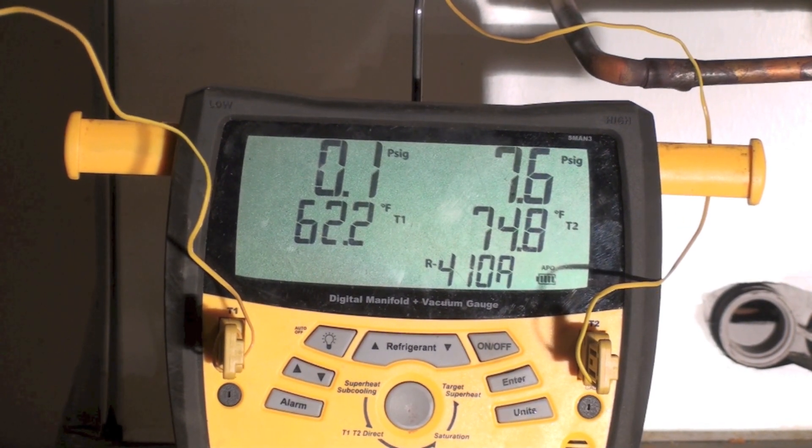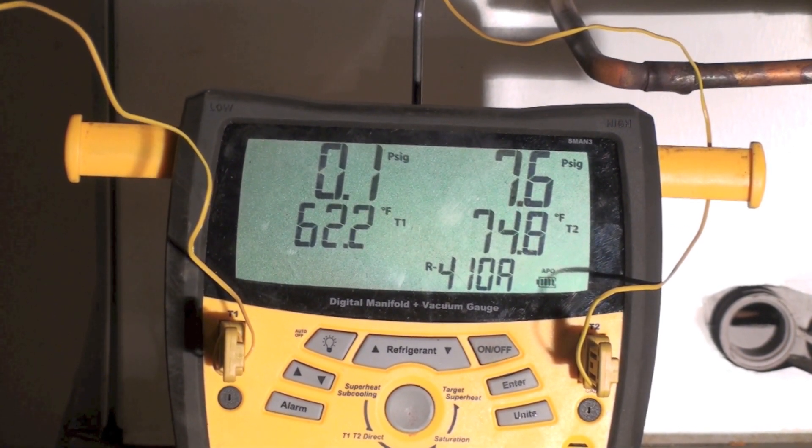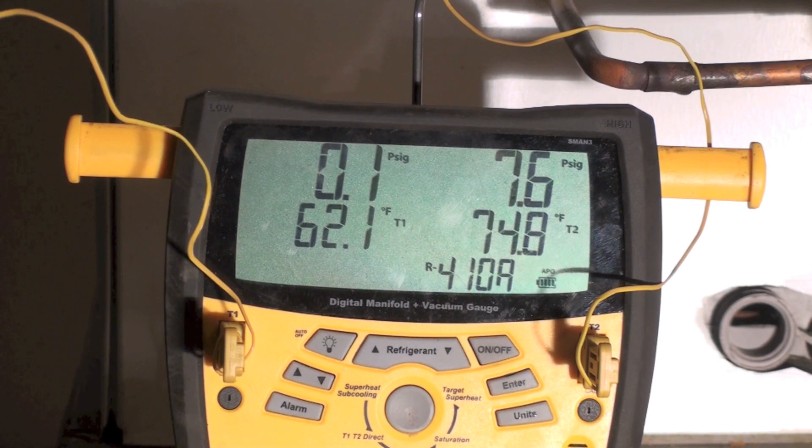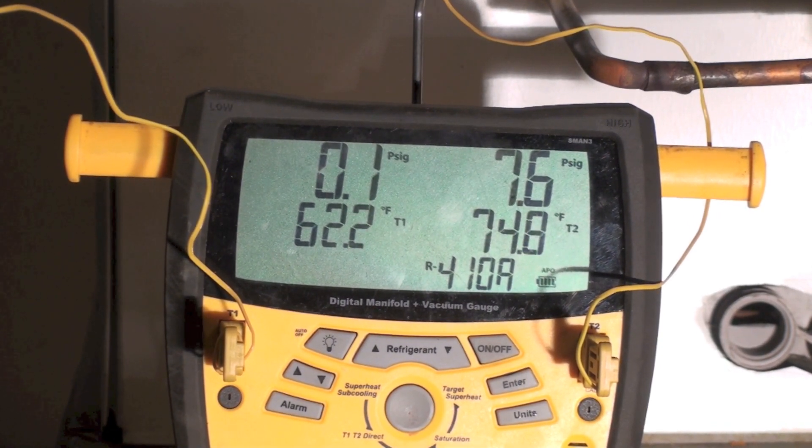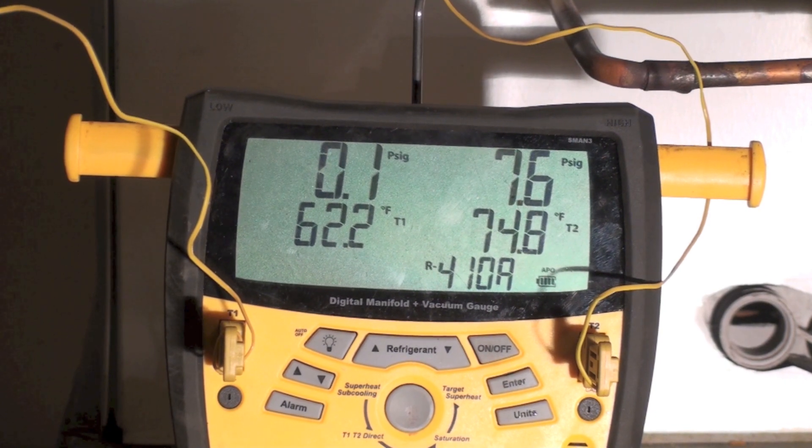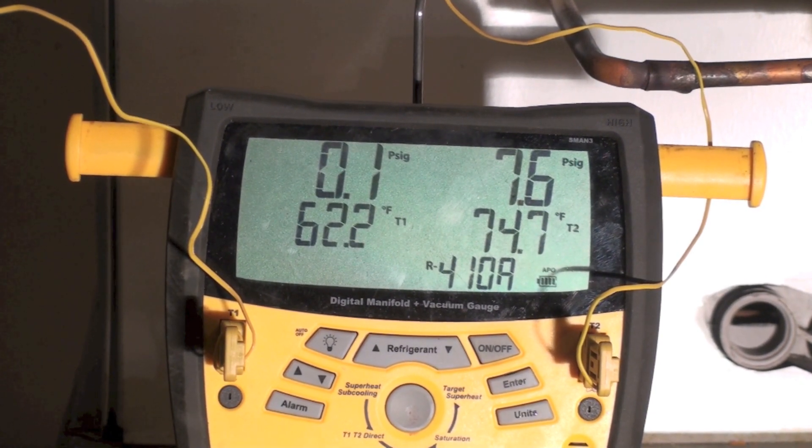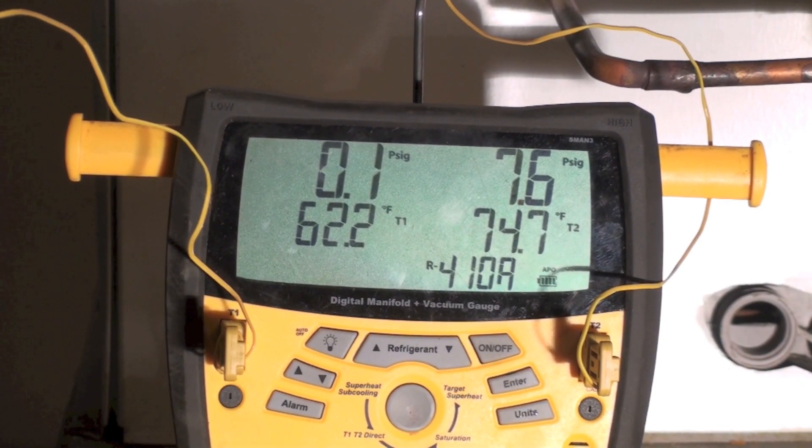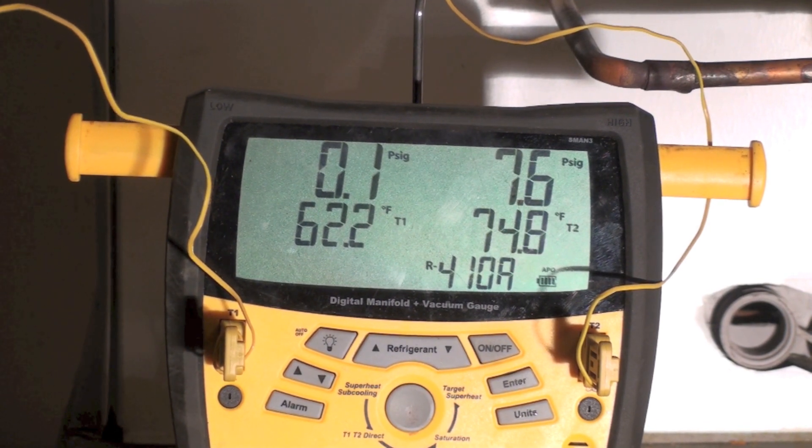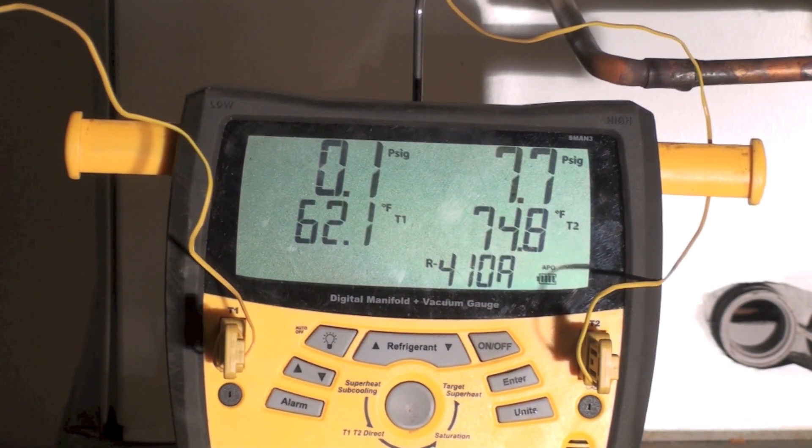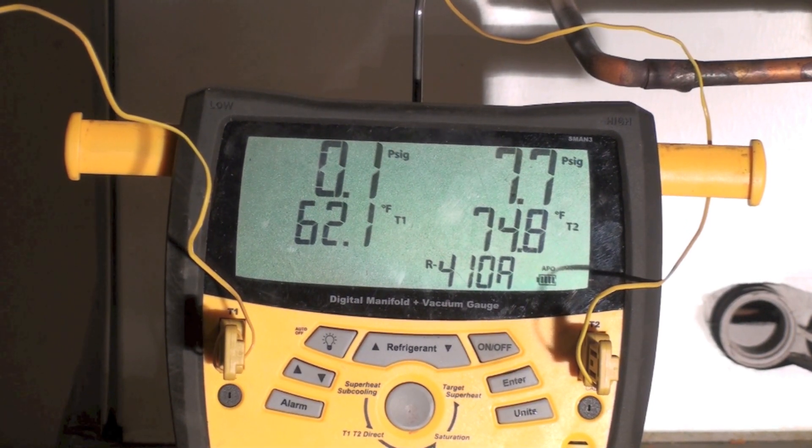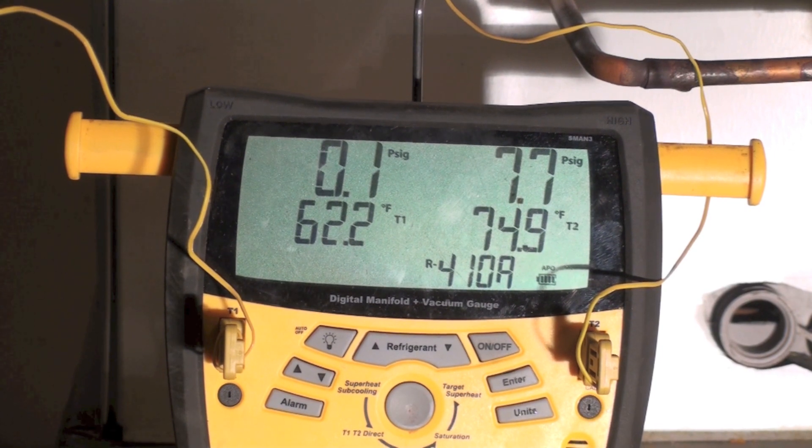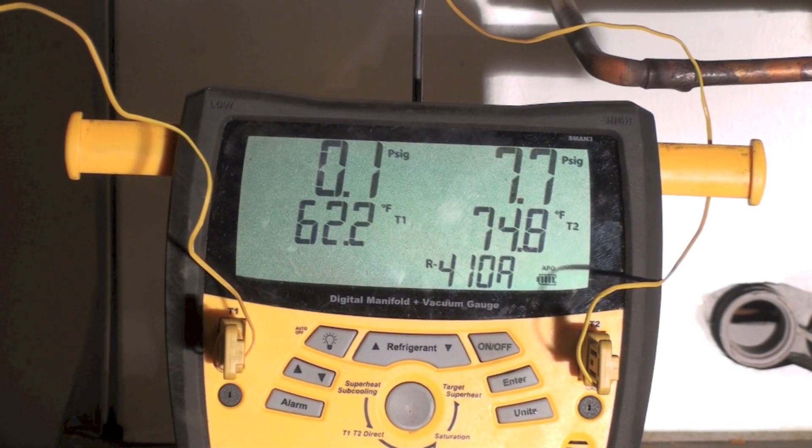Now if the humidity is high, let's say we're in Florida, it's 98% humidity, the temperature difference between these two probes is going to be very low because there's no room in the air to absorb moisture. If I have a lot of moisture in the air, then there's not much room for more moisture to get in the air.